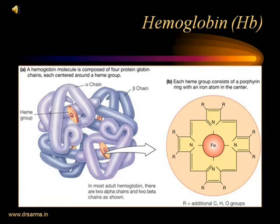Hemoglobin is composed of two components — the heme and the globin. The globin component is the protein component of hemoglobin. The globin has four chains: two alpha chains and two beta chains. Abnormalities in the structure of these chains can lead to anemia due to hemoglobinopathy. The heme component has a central iron atom surrounded by four pyrrole rings. For the synthesis of hemoglobin, we require the central iron core atom, the formation of four pyrrole rings, and the formation of four globin chains — two alpha and two beta chains.